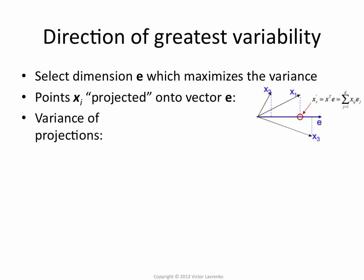Now, suppose that E is a vector, any vector. It doesn't have to be an eigenvector. We're going to prove that it is, but for now just assume that it's any vector, and we're going to be projecting the points onto E. What we want to do is measure the variance of the projections. So what does it mean? Here's our vector E pointing somewhere in space. We've got X1, X2, and X3. These are our data points in the original space.